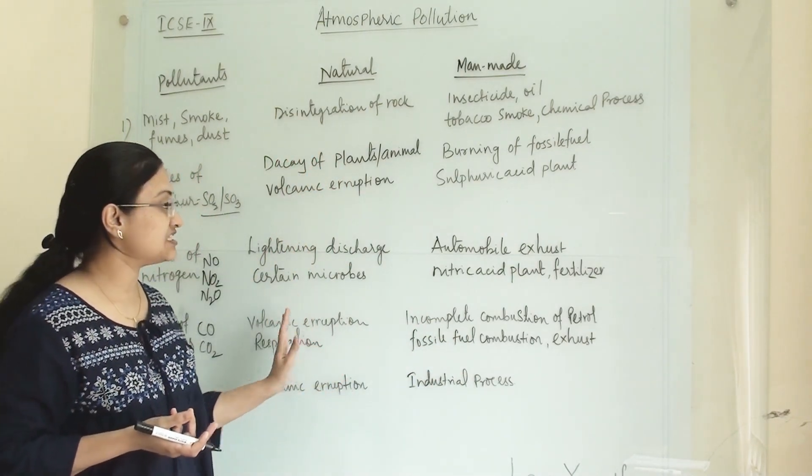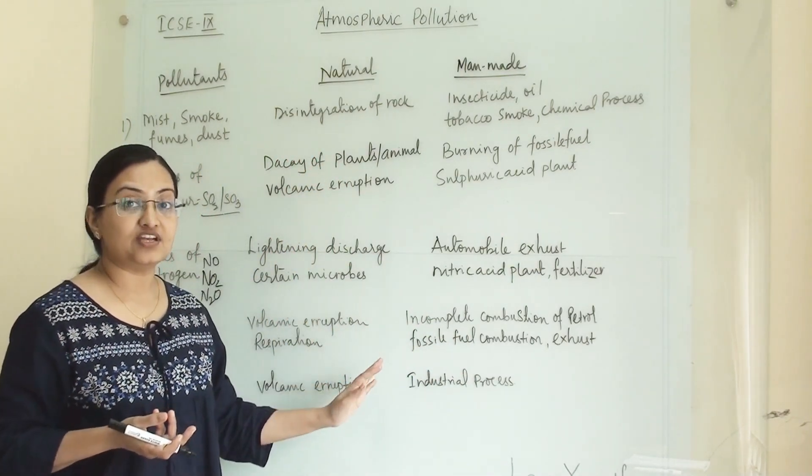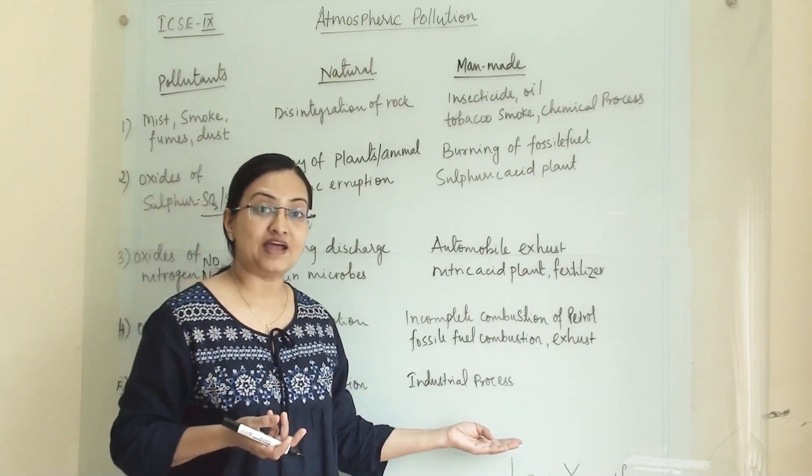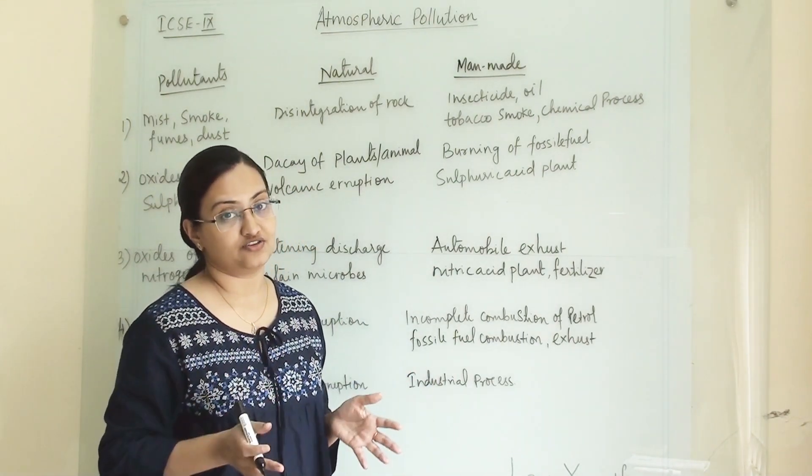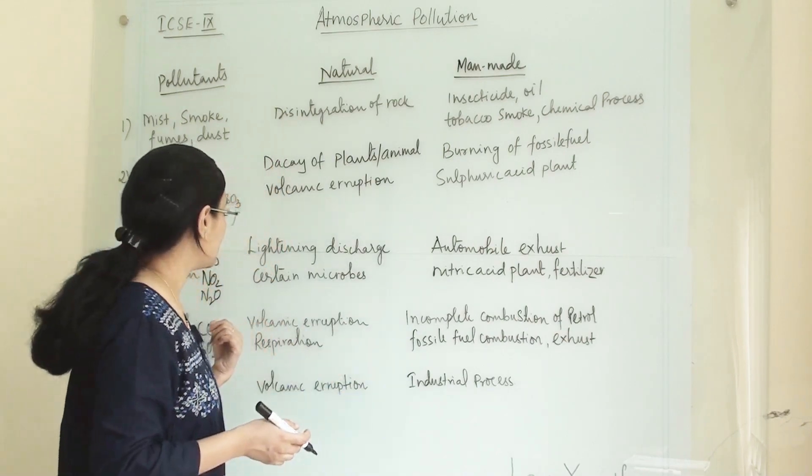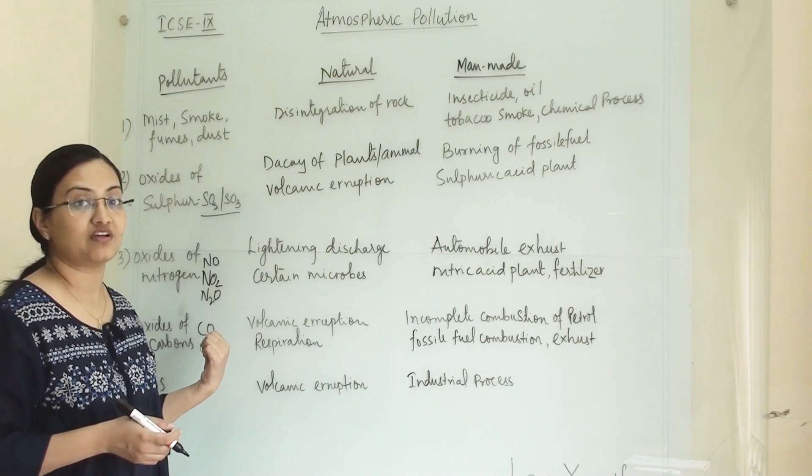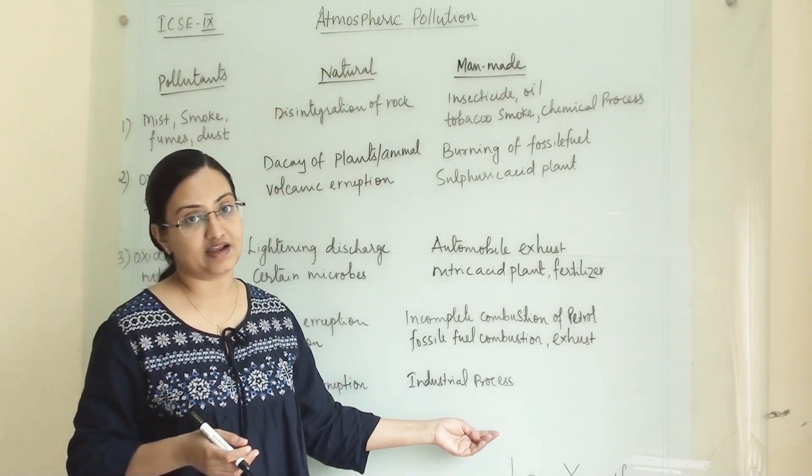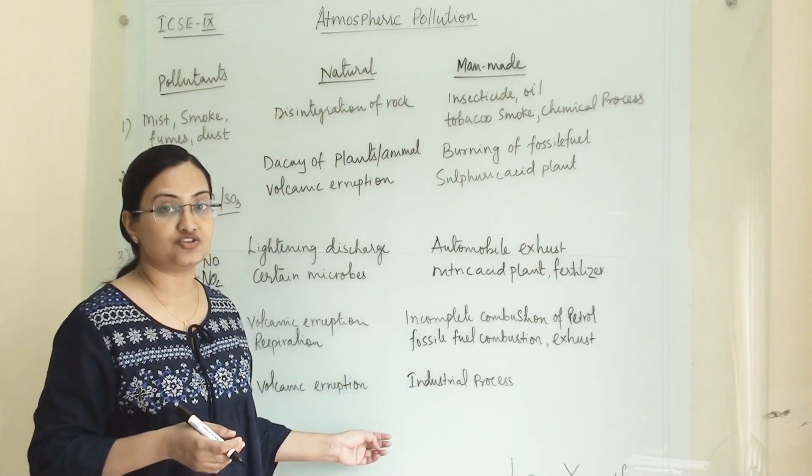But if we see on average, the share of manmade activity is huge and large. So 70 to 80% of pollutants which are generating in the atmosphere are coming from manmade activity and not via natural sources.